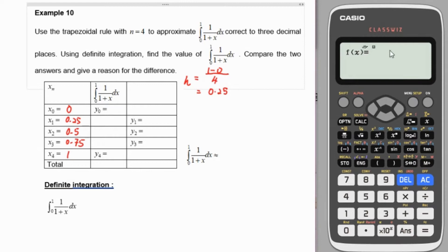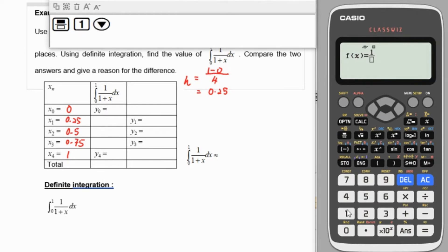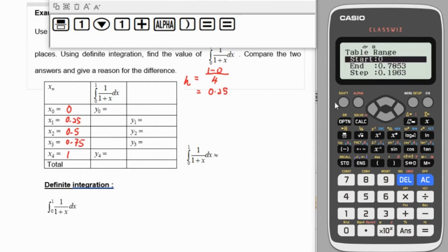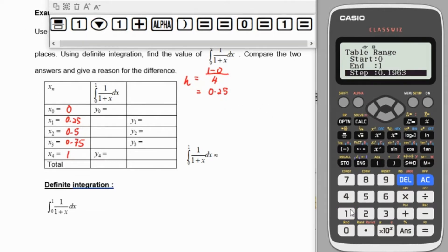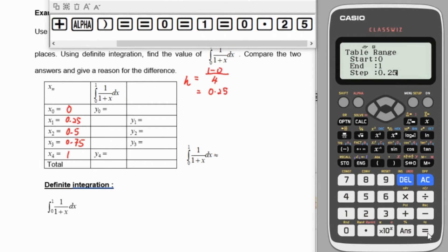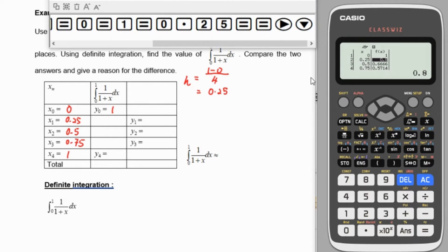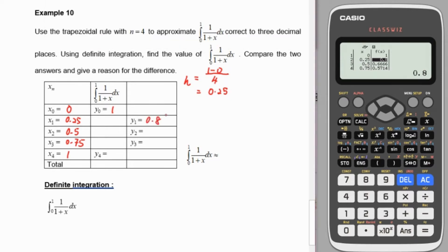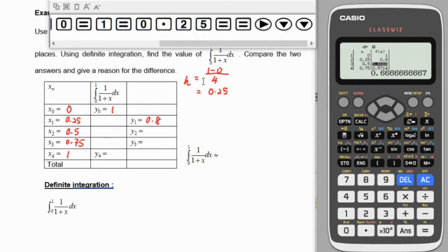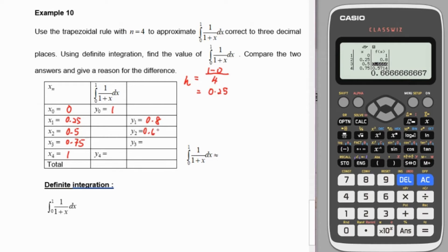Then we plug in our value where our function is 1 over 1 plus x. The start ordinate is 0 and the ordinate is 1, and h is 0.25. You can see our answer of the value when x equals 0, y is 1, when x equals 0.25, y is 0.8, and then 0.666.